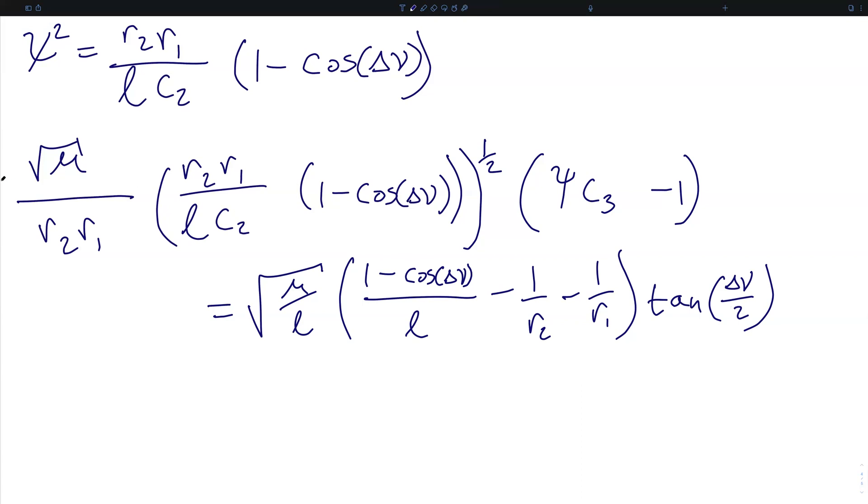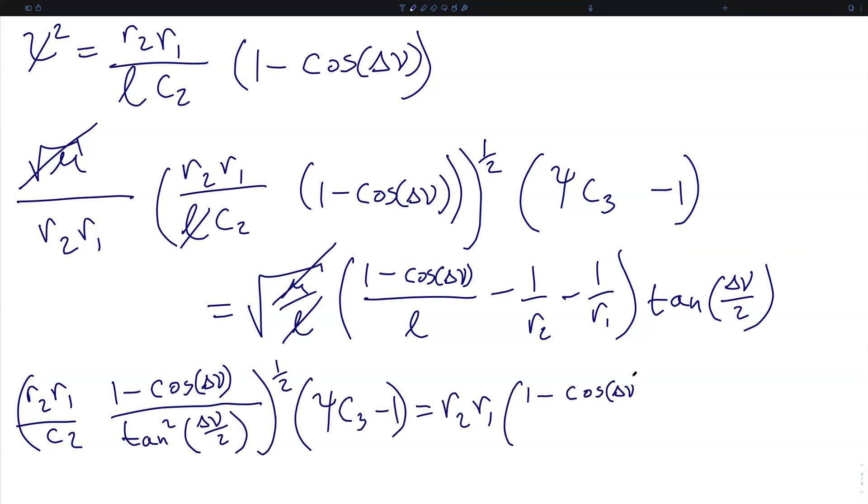We can instantly cancel the square root of mu here and the square root of l here. Then we're going to multiply this whole expression by the product r2 r1 in order to cancel this denominator, and that will leave us with everything multiplied by r2 r1.